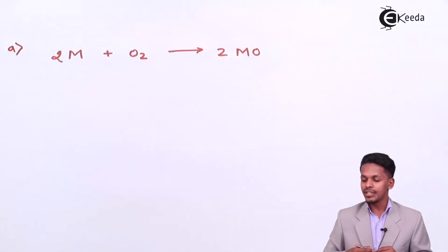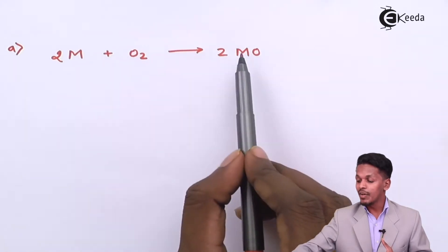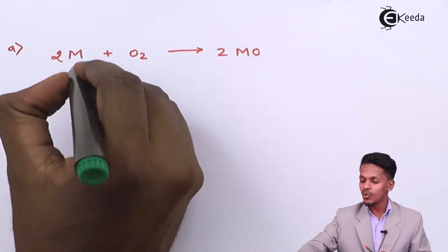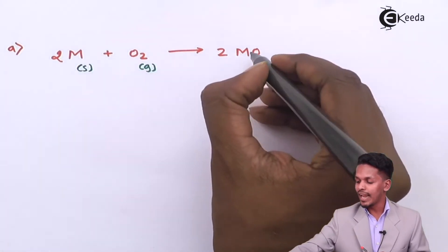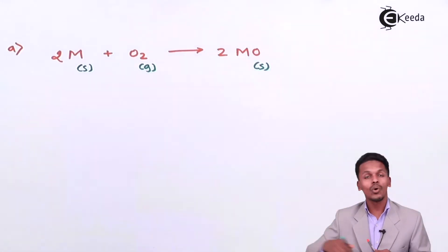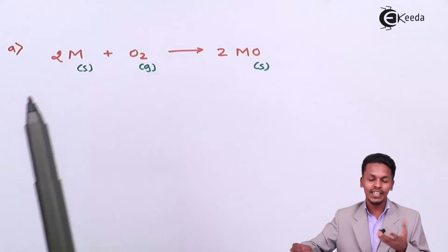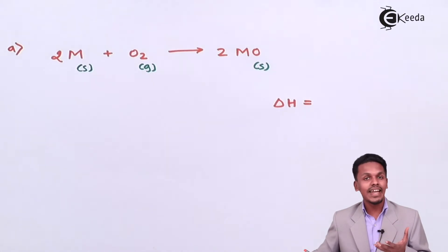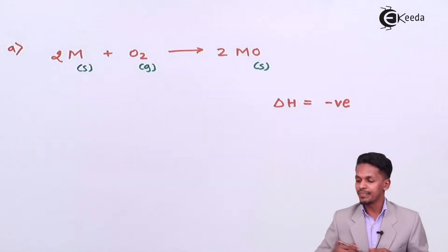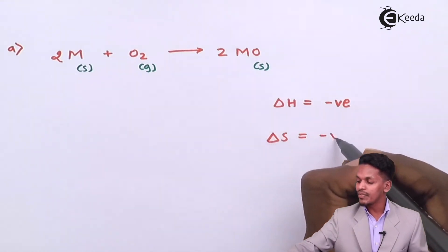The product formed is two moles of metal oxide MO. The balanced reaction is: 2M(s) + O₂(g) → 2MO(s). The metal is in solid phase, oxygen is gaseous, and the metal oxide is also solid. This is a combustion reaction and is exothermic, so delta H has a negative value. It has also been found that the delta S value is negative for this reaction.